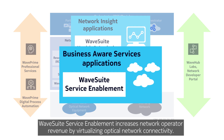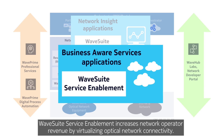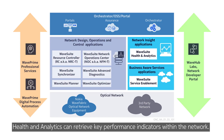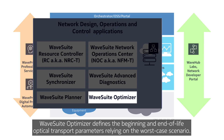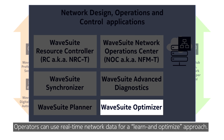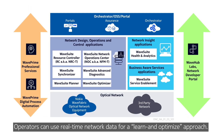WaveSuite service enablement increases network operator revenue by virtualizing optical network connectivity. Health and analytics can retrieve key performance indicators within the network. WaveSuite Optimizer defines the beginning and end-of-life optical transport parameters relying on the worst-case scenario. Operators can use real-time network data for a learn and optimize approach.